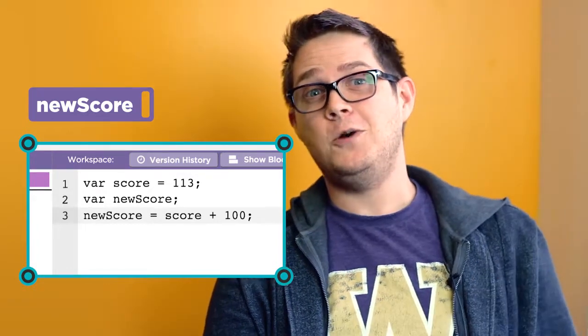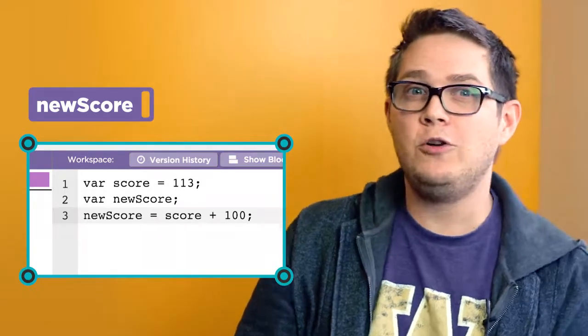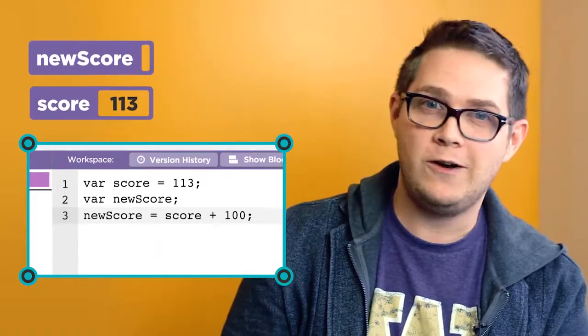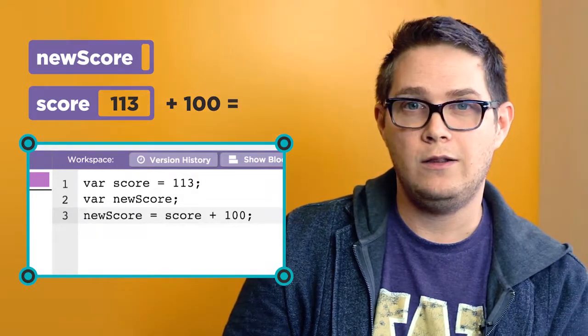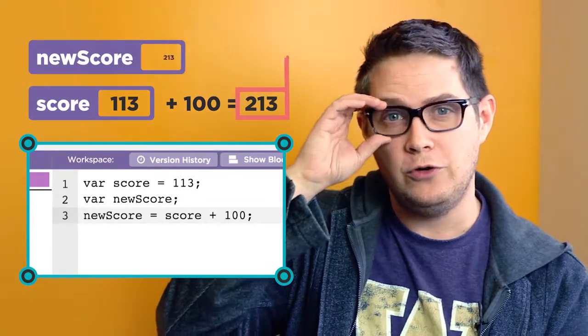To calculate the value of our new variable, the computer must first retrieve the value of the variable score from memory, and then add 100 to it. The resulting number is the value of new score.